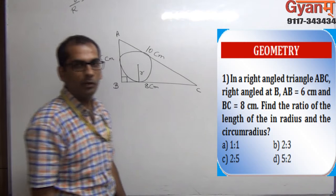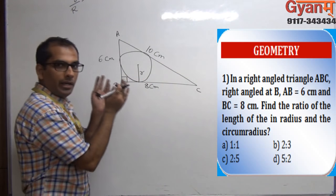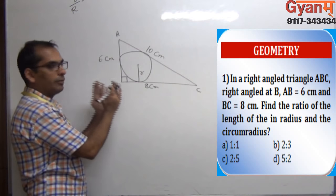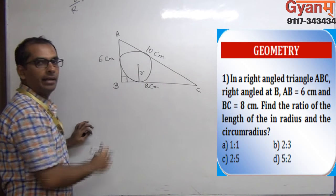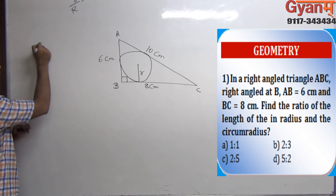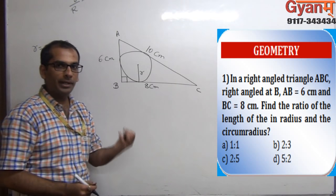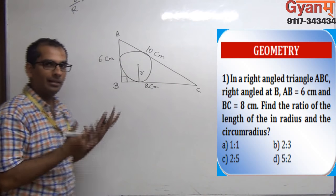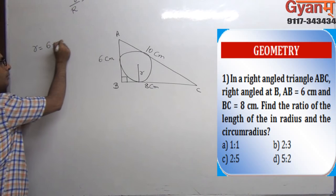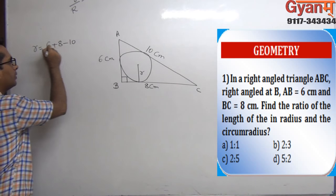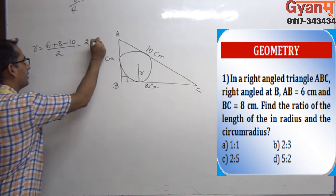Now let us draw the incircle and find the value of small r. In these types of questions where the triangle is a right angle triangle, the value of small r can be calculated directly using the formula: small r is equal to perpendicular plus base minus hypotenuse, divided by 2. That gives us r equal to 2 centimeters.